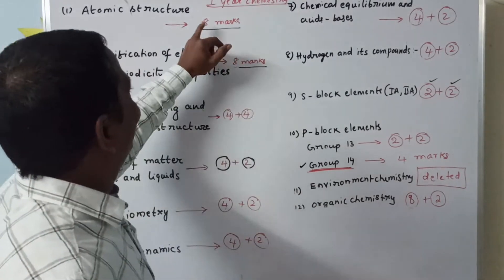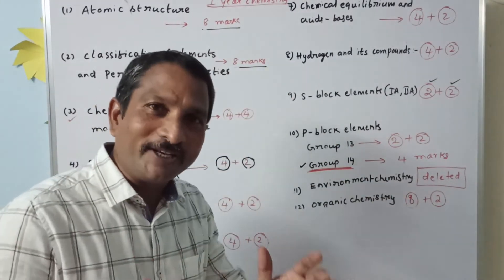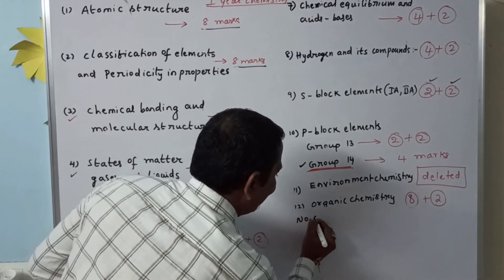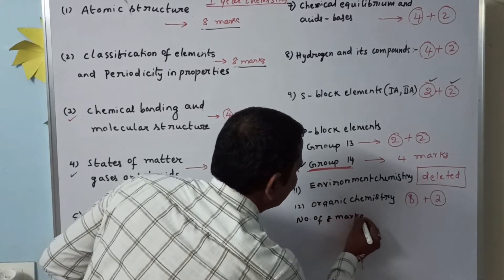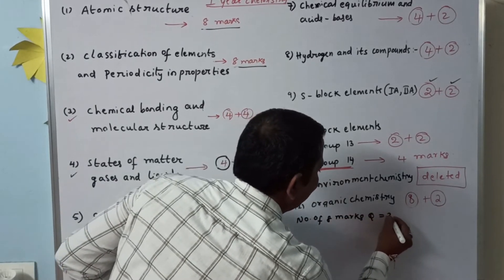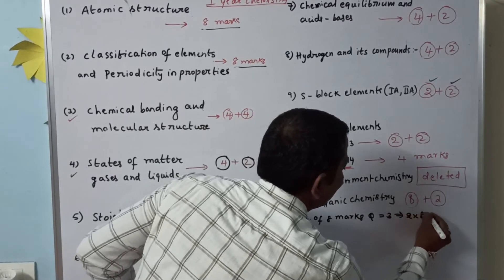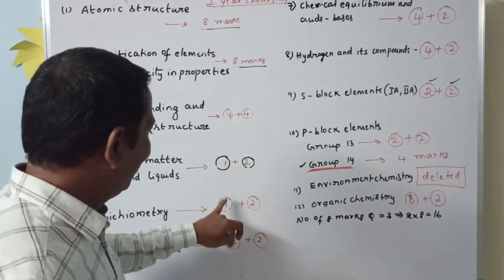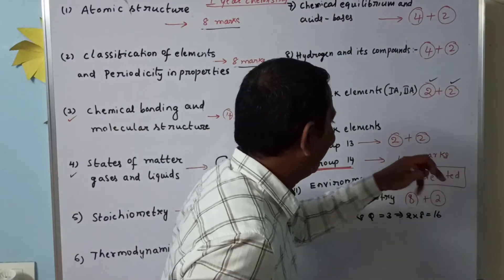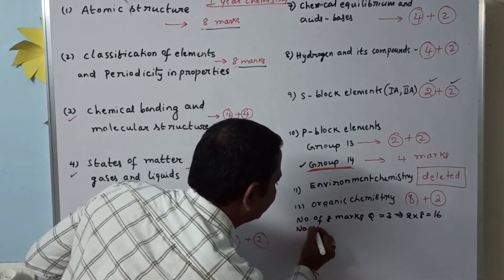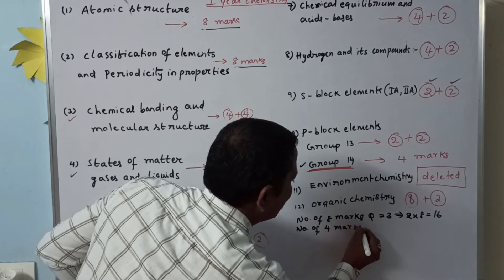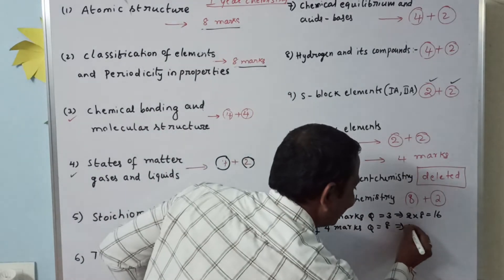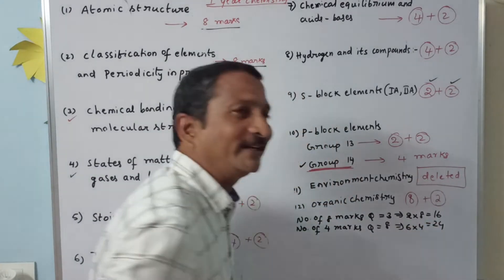There are three eight-mark questions in the table. Out of three questions, we should write only two. Two eights are sixteen. There are eight four-mark questions in the table. Out of eight, we should write six questions. Six fours are twenty-four.